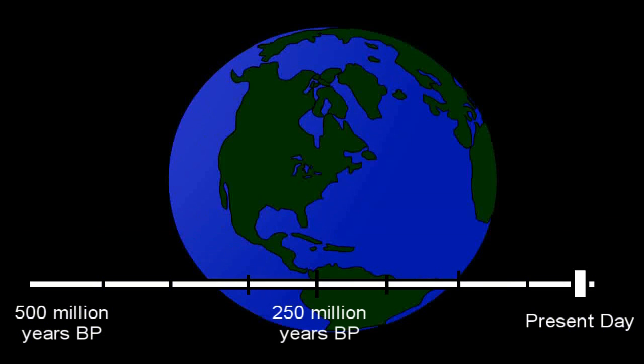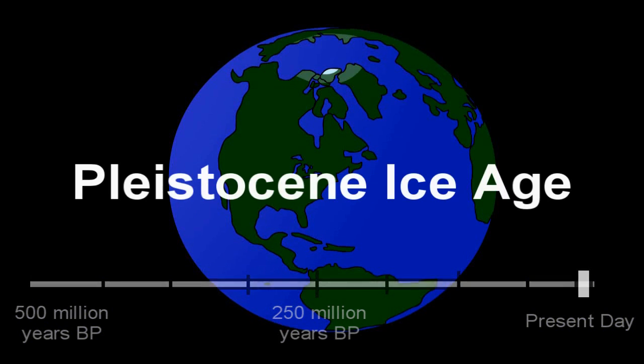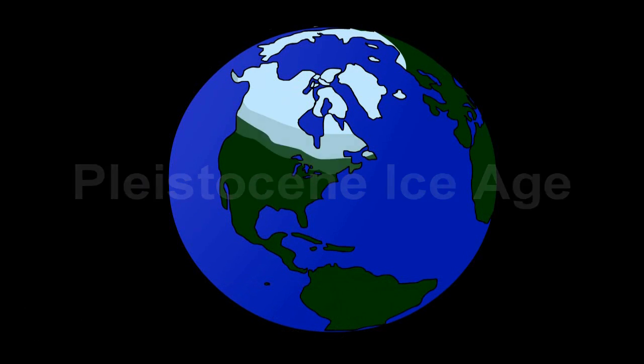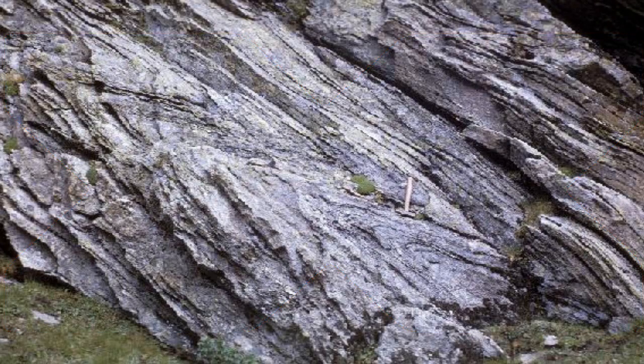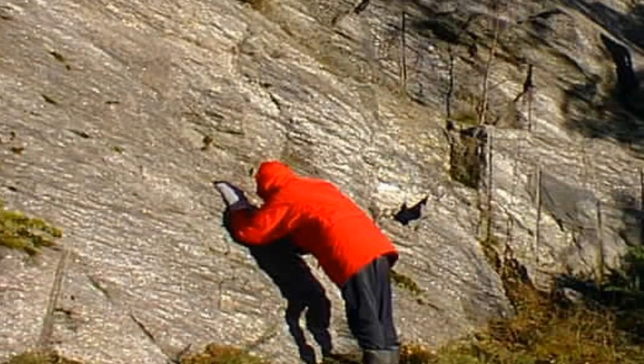The schist was finally exposed at the surface within the recent Pleistocene Ice Age, when ice sheets originating in northern Canada scraped south across New England multiple times. And then only very recently, a geologist found the mica schist in New Hampshire, took it back to Brown, and put together its amazing story.